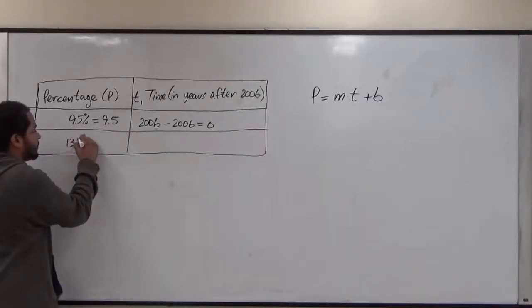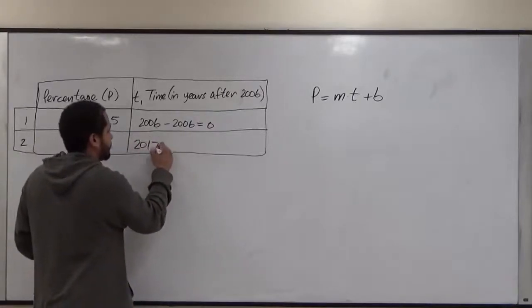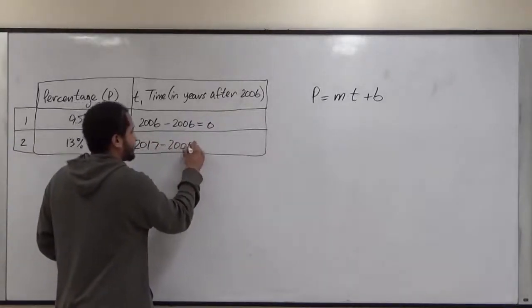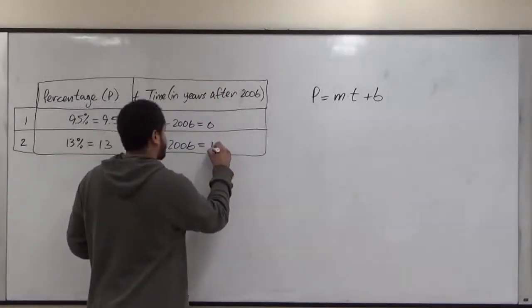The second one is 13%, which just becomes 13, and the year is 2017. So we're going to subtract that 2006 to get the other T value. And this becomes 11.